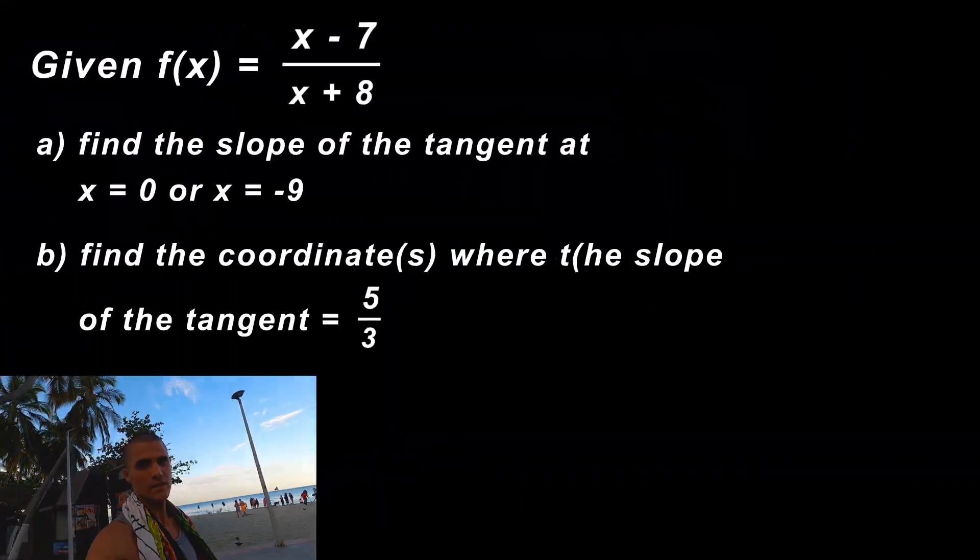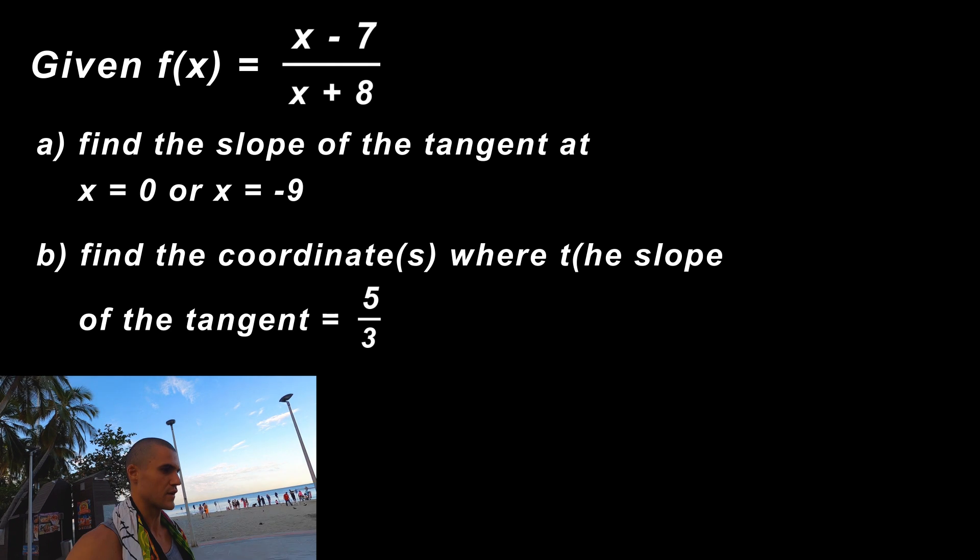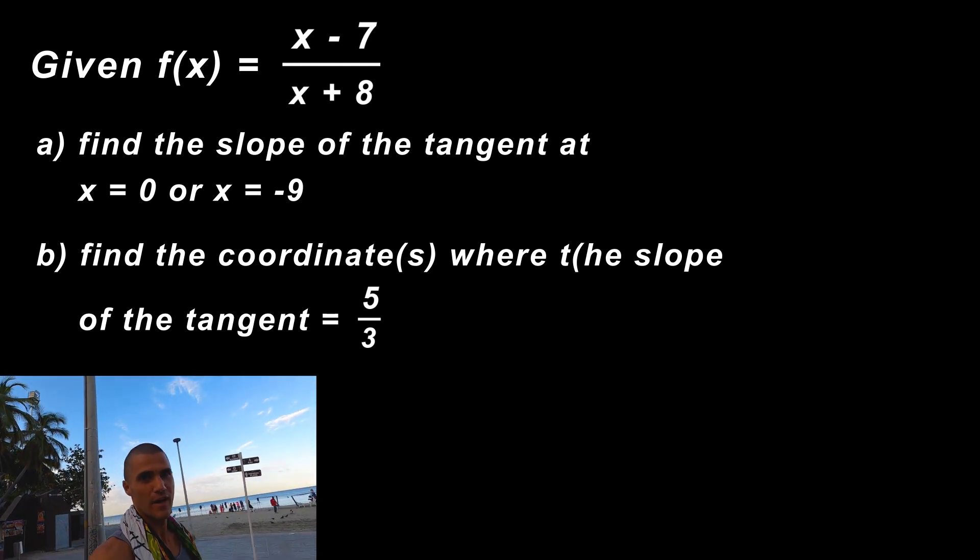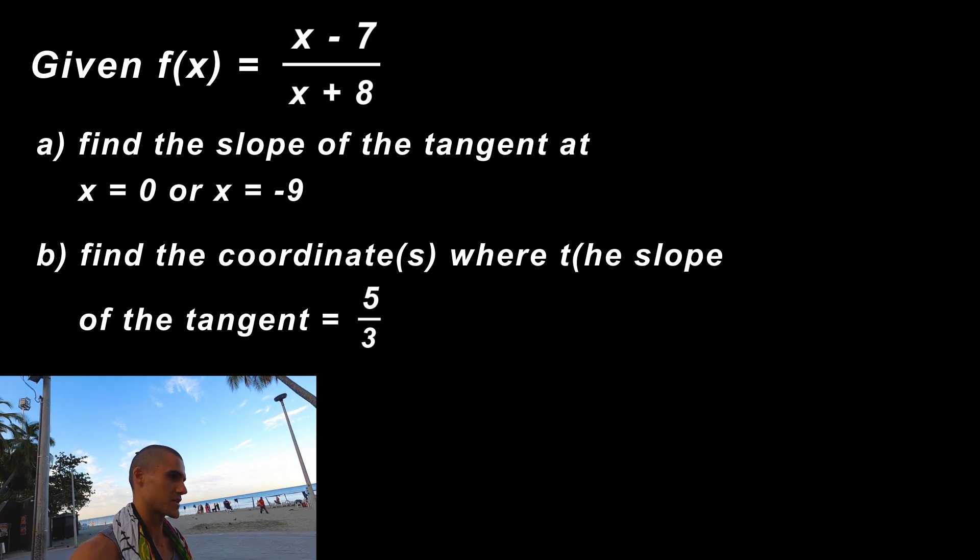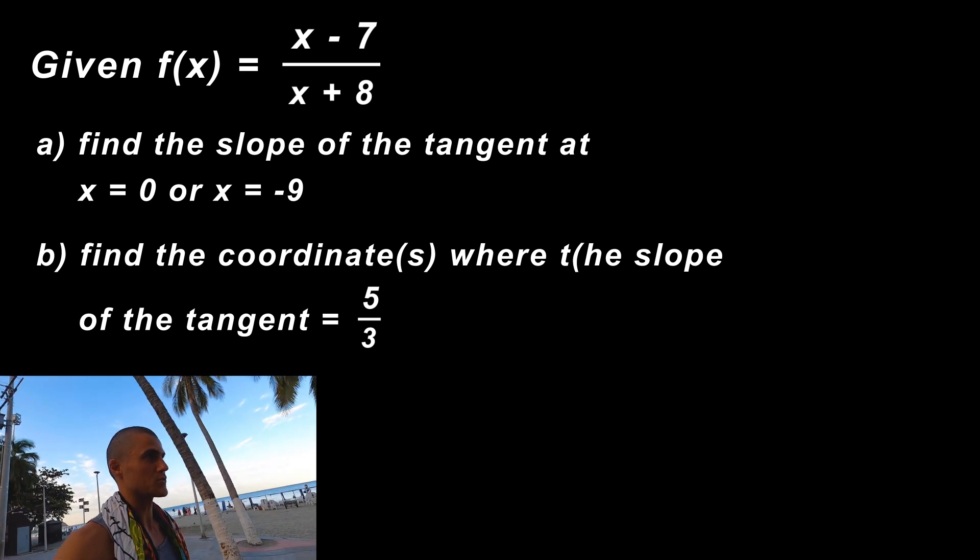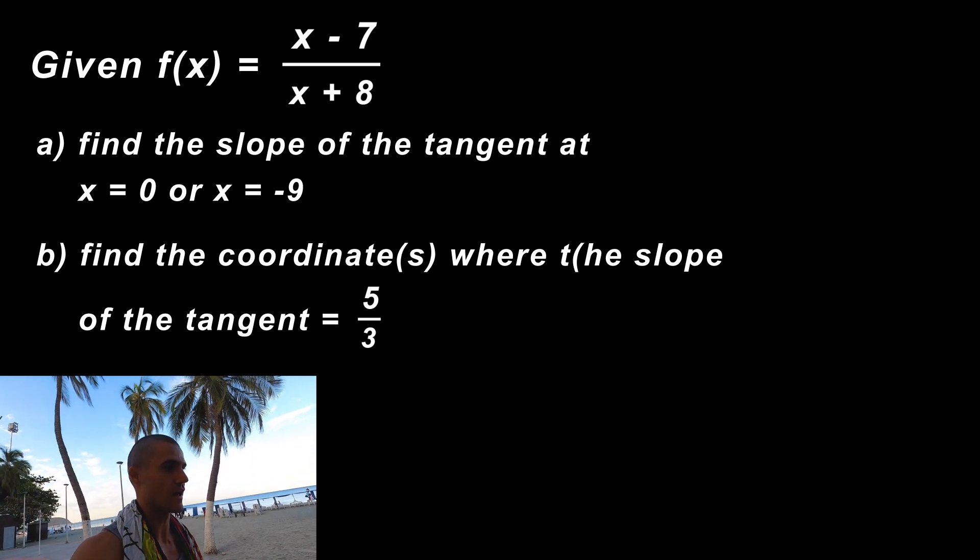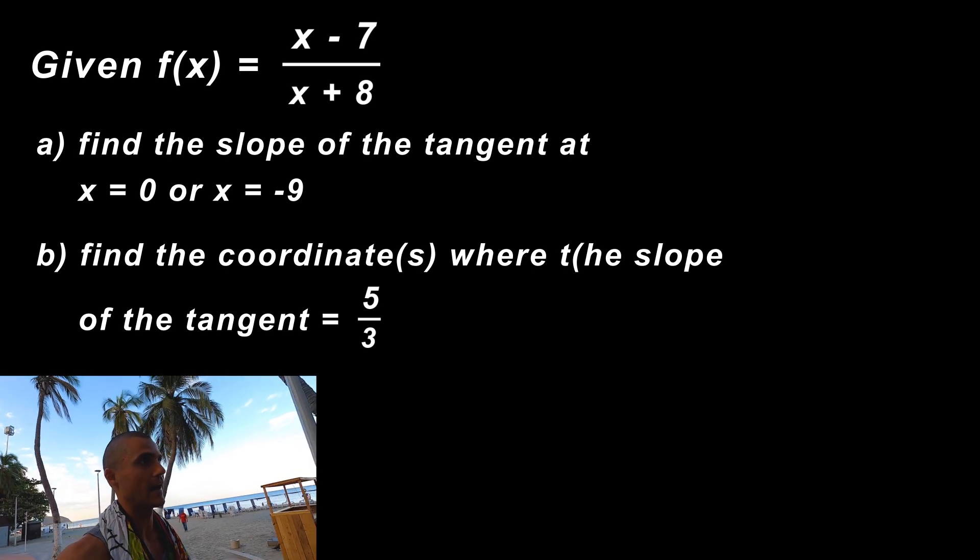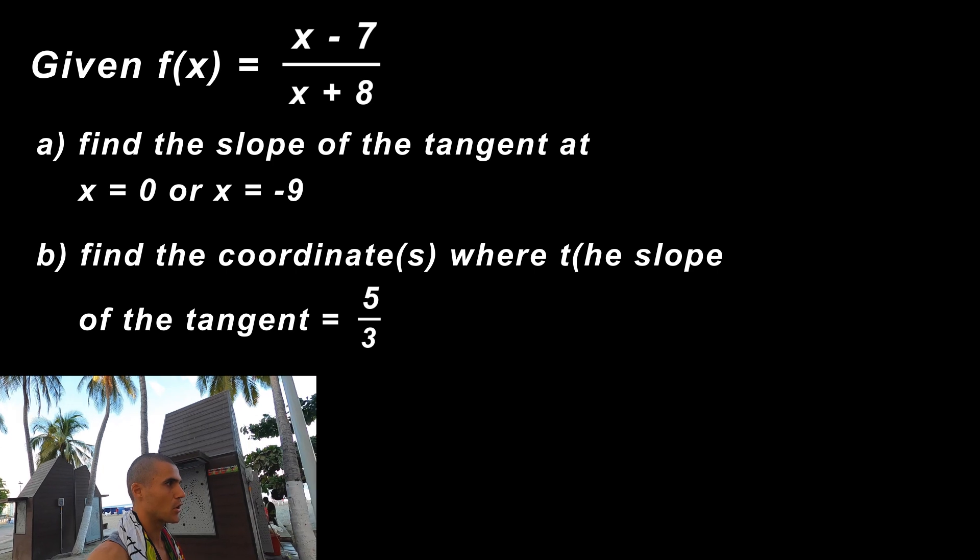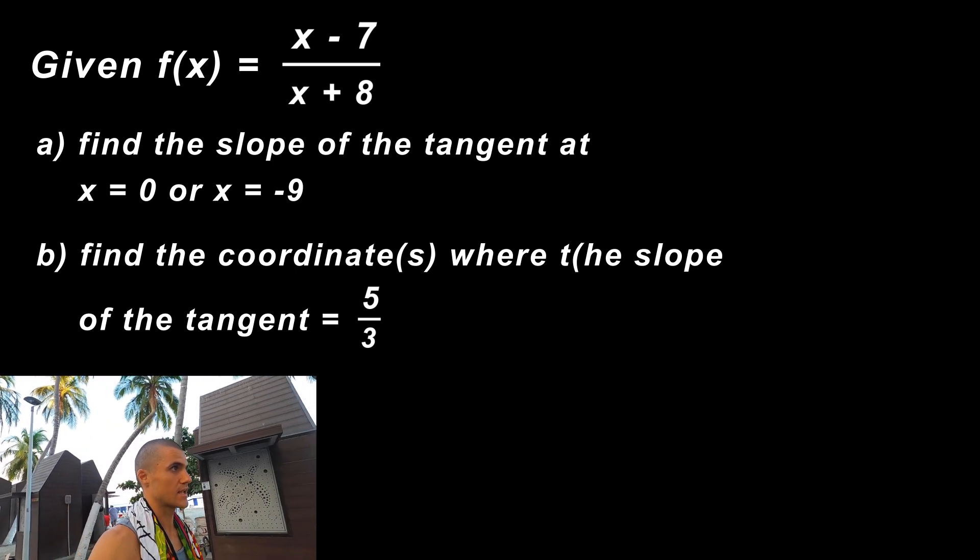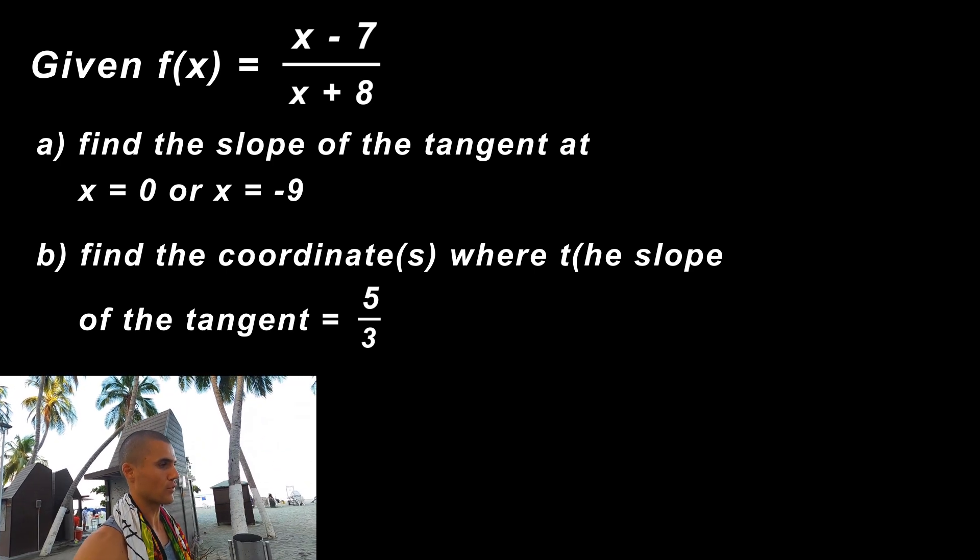In this specific question we're dealing with the slope of a tangent. We're given the function f(x) equals (x - 7)/(x + 8). There's a couple of parts: we have to find the slope of the tangent at two different x values, at x = 0 and at x = -9, and then in part B we have to find what coordinates on the function does the slope of the tangent equal 5/3.